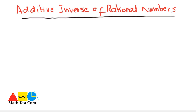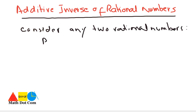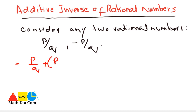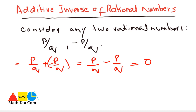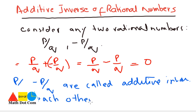Let's see how you can find the additive inverse of rational numbers. Consider any two rational numbers p over q and minus p over q. If we add them together: p over q plus minus p over q, removing the brackets you get minus p over q, and the result is zero — just like one plus minus one equals zero. Hence, p over q and minus p over q are called additive inverses of each other.